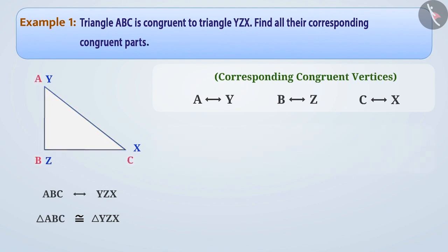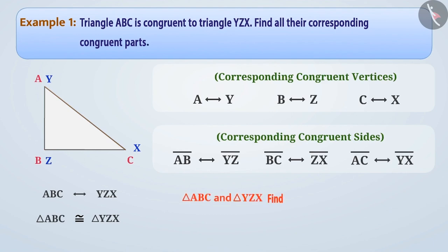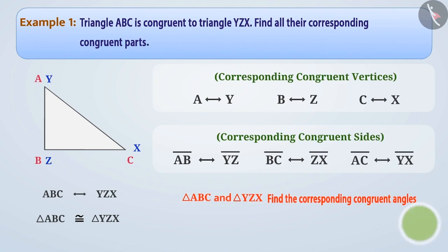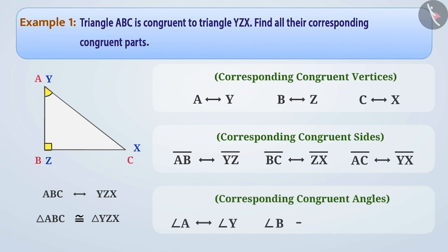So the corresponding congruent sides of the two triangles are: AB is matching with YZ, BC is matching with ZX, and AC is matching with YX. Will you now be able to find the corresponding congruent angles of triangle ABC and triangle YZX? Their corresponding congruent angles will be: angle A is matching with angle Y, angle B is matching with angle Z, and angle C is matching with angle X.